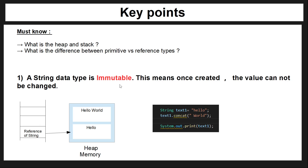The important thing is that when you create or change a value, we actually create another value in heap memory. Then our garbage collector comes around and will dispose of anything in our heap memory that isn't connected to a reference in our stack.